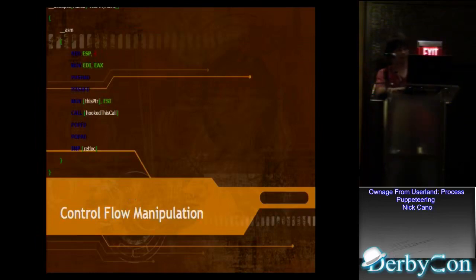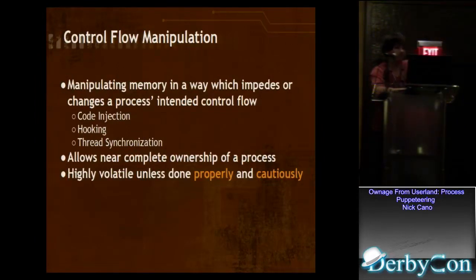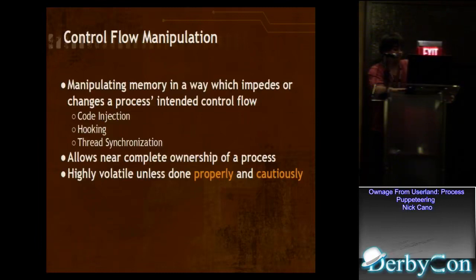Then control flow manipulation — most of you know it's going to be hooking, code injection, DLL injection. It's manipulating memory in a way which impedes or changes the process's intended control flow. You're probably going to inject your code and then be hooking. If you're trying to stay hidden and be effective, thread synchronization comes into play. A lot of people do this wrong and it causes programs to crash. You want to make sure when you're working with the memory of a remote process that you're in sync with it. This allows you near complete ownership of a process, assuming you've reversed it and know what you want to achieve.